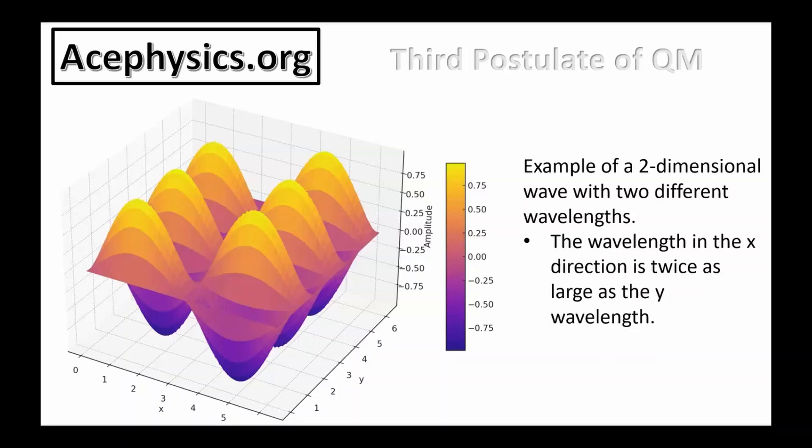On this slide, I have an example of a two-dimensional wave function that has two different wavelengths, one in the x direction and one in the y direction. In quantum mechanics, this means the particle has two independent momentum components.